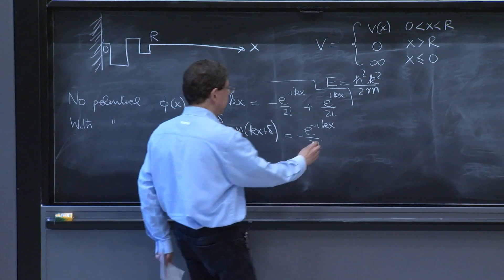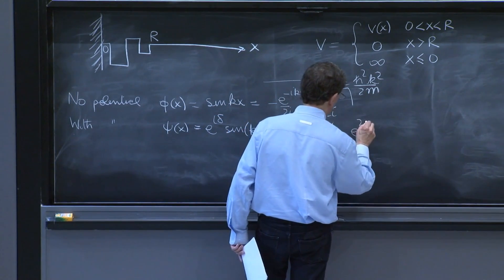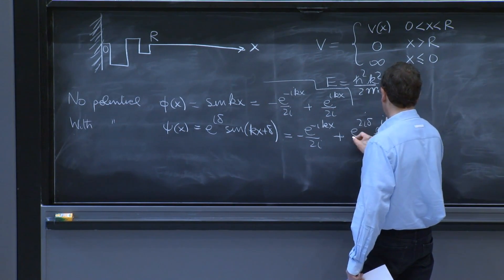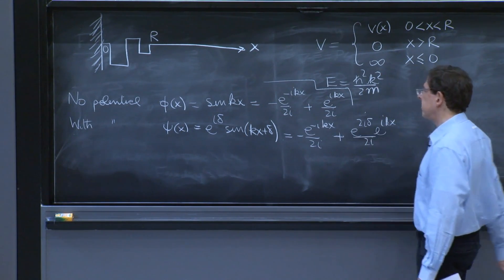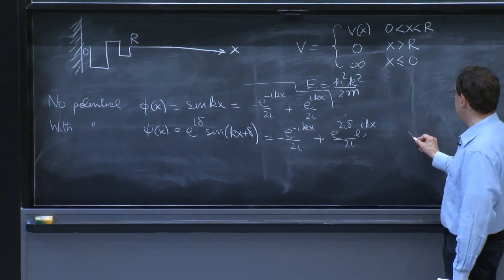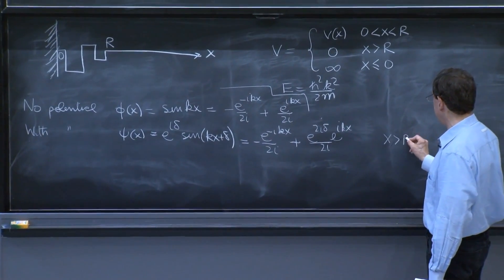On the other hand, here you would have e to the 2i delta, e to the ikx over 2i. And this solution is only valid for x greater than r.